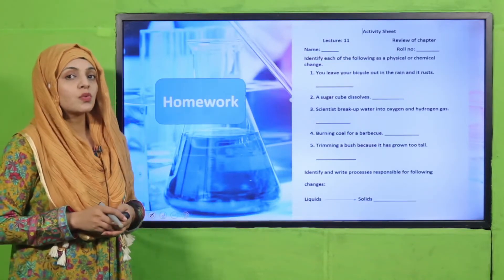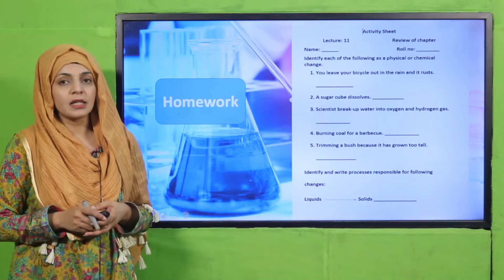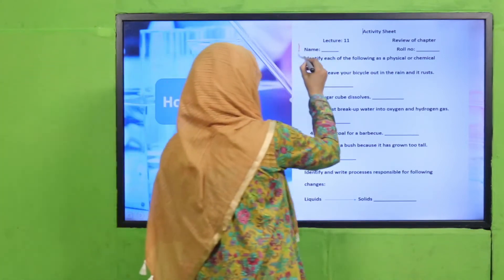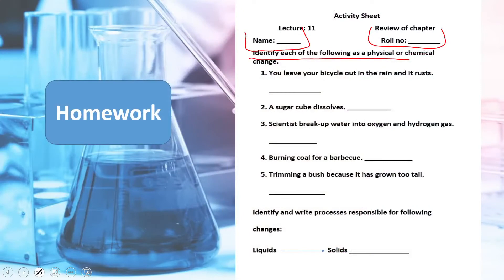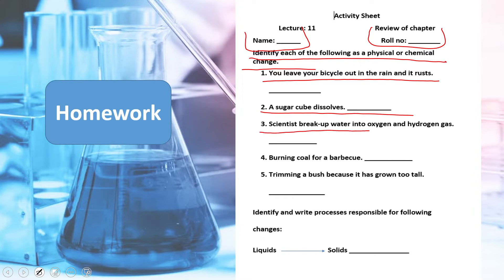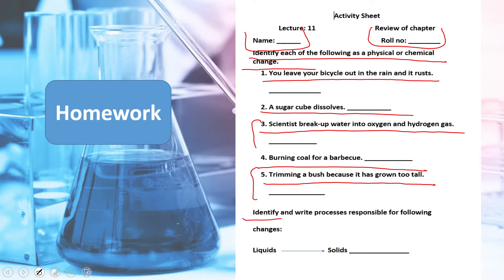Now is the time for practice. You can download this worksheet from the description box below this video or get it in print from your teacher. Write down your name and roll number. Identify each of the following as a physical or chemical change: You leave your bicycle out in the rain and it rusts. A sugar cube dissolves. Scientists break up water into oxygen and hydrogen gas. Burning coal for a barbecue. Trimming a bush because it has grown too tall.